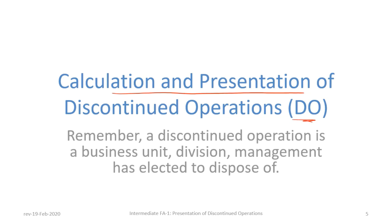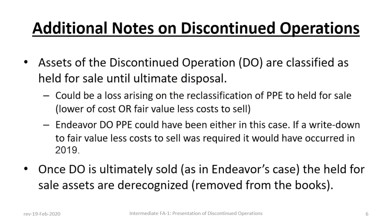As described in Tutorial 1, a Discontinued Operation is a business unit or division that management has elected to dispose of. Before continuing with our illustration, here's a good opportunity to discuss some brief notes on Discontinued Operations.